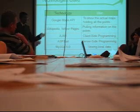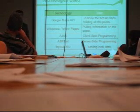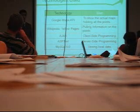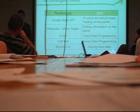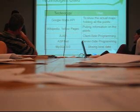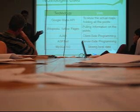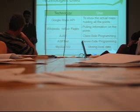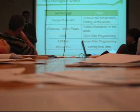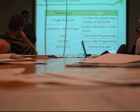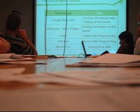For getting information from the point of interest, we have used Wikipedia and Google Pages. For Wikipedia, we have used basically the database of Wikipedia, which is DBPedia. This is an open source project where you can use a specific query technique called SPARQL, and you can query for particular information and fetch the data in XML, HTML, or whatever format you want.